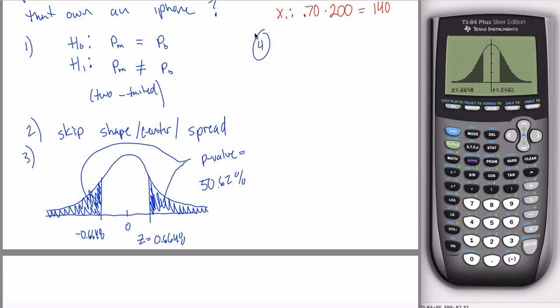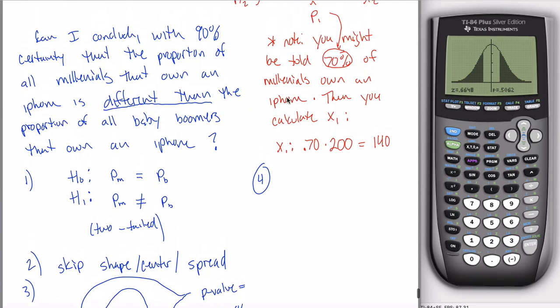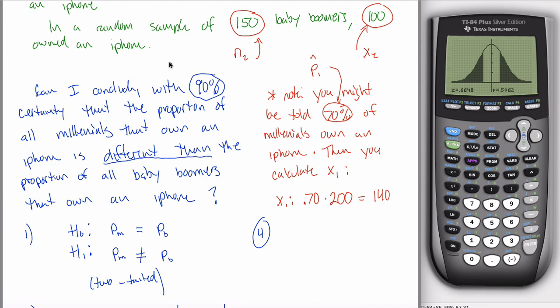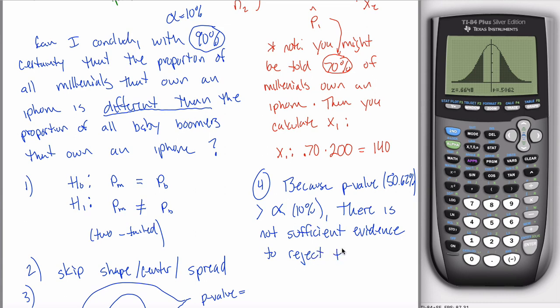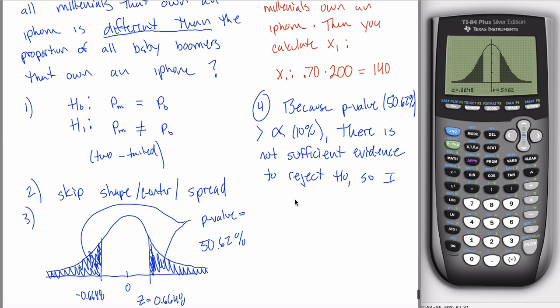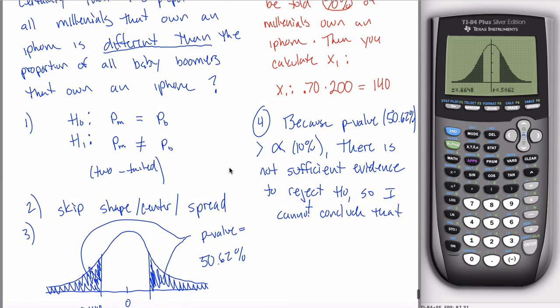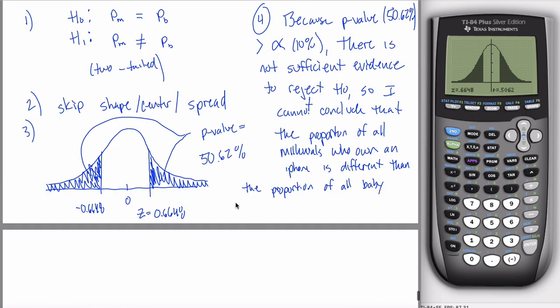My P-value is 50%. And then step four, which I guess is really step three because you're skipping step two, is to state your conclusion. And good news, conclusion is the same as it's been. Why are you doing what you're doing? Because the P-value is greater than alpha. Alpha was 10%. P-value is 50%. So because my P-value is greater than alpha, there is not sufficient evidence to reject the null hypothesis. And if you can't reject the null hypothesis, you can't say the claim is true. So I cannot conclude that the proportion of all baby boomers that own an iPhone is different than the proportion of all millennials.